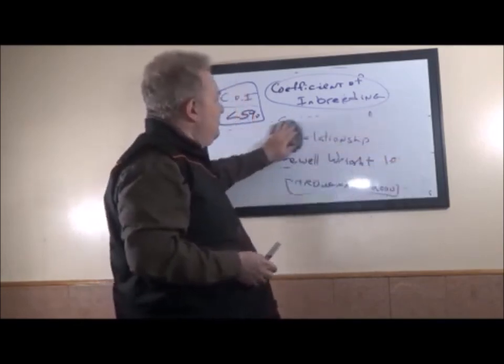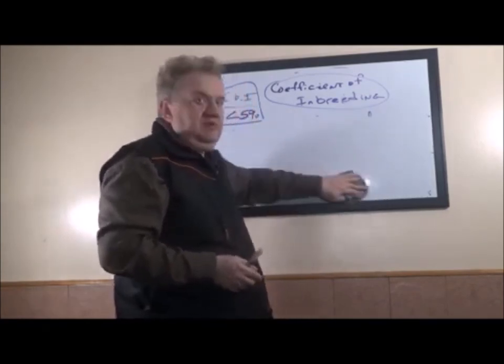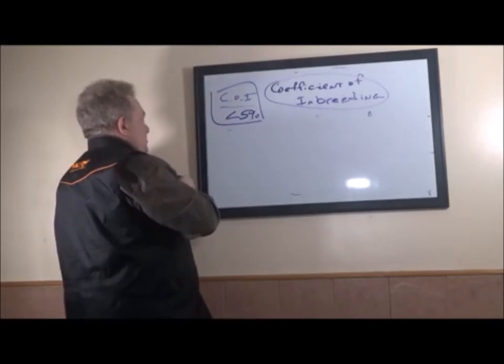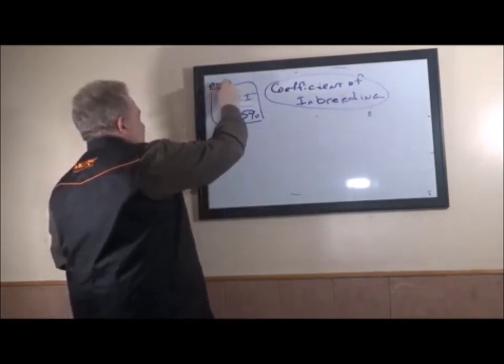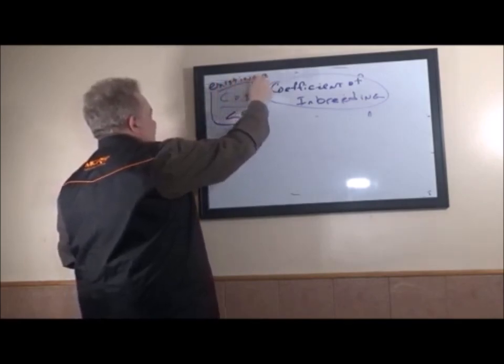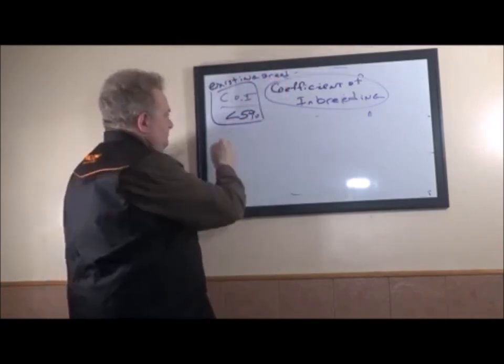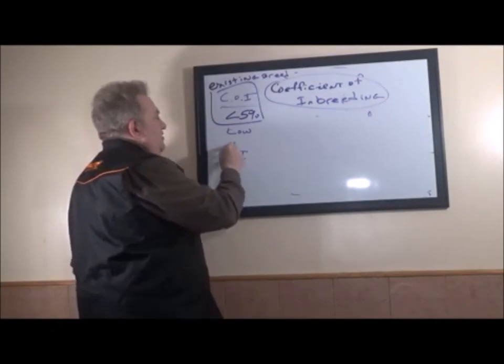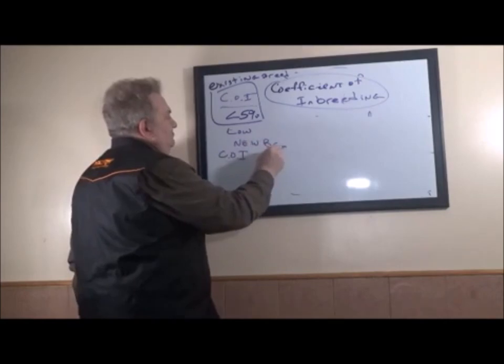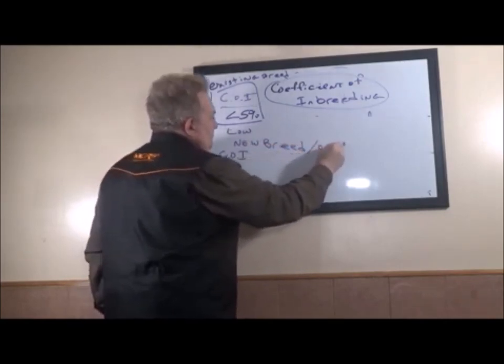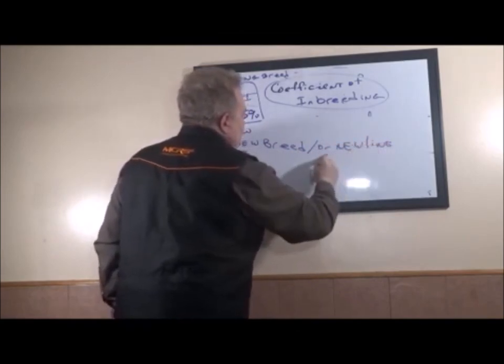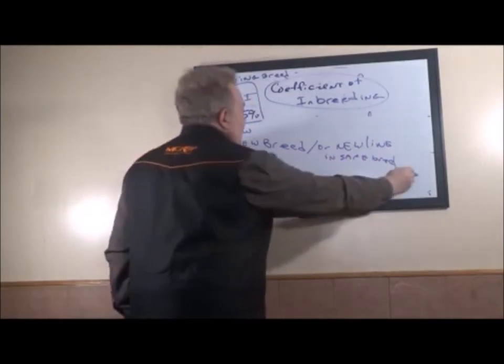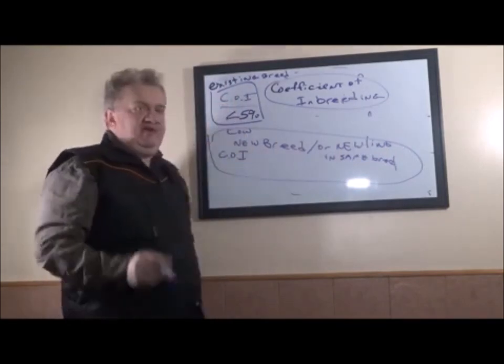However, if you have a low inbreeding coefficient, that's exactly the opposite of what you want to do when you're creating a breed. When you are having an existing breed, you want to keep the COI low. When you're trying to create a new breed, you want to create a COI high. If you want to create a new breed, you want to create a high COI. If you have an existing breed, you want to keep a low COI.